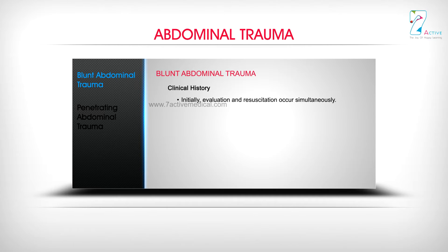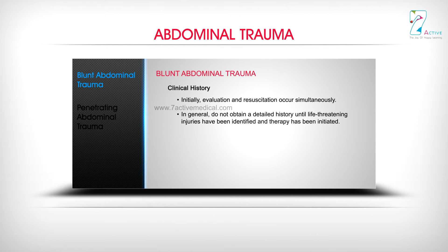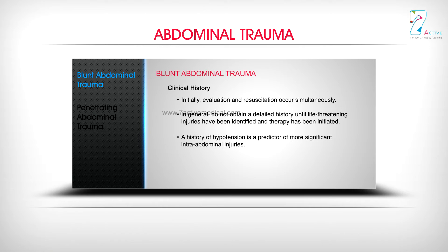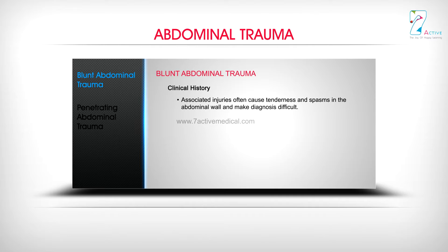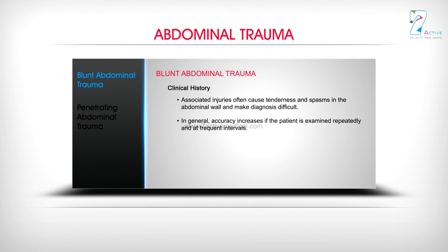Clinical history: Initially, evaluation and resuscitation occur simultaneously. In general, do not obtain a detailed history until life-threatening injuries have been identified and therapy has been initiated. A history of hypotension is a predictor of more significant intra-abdominal injuries. The initial clinical assessment of patients with blunt abdominal trauma is often difficult and notably inaccurate. Associated injuries often cause tenderness and spasms in the abdominal wall, making diagnosis difficult. Accuracy increases if the patient is examined repeatedly and at frequent intervals.